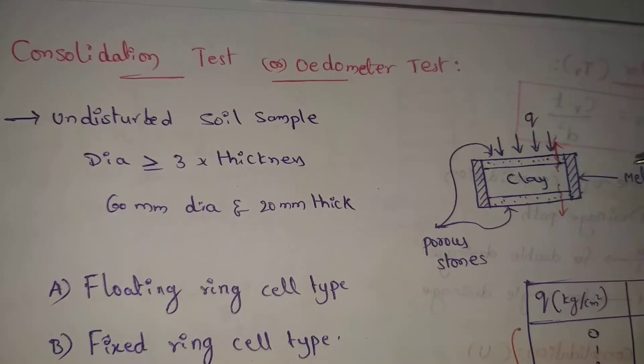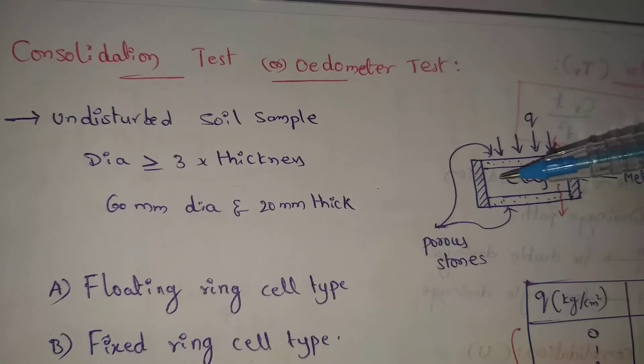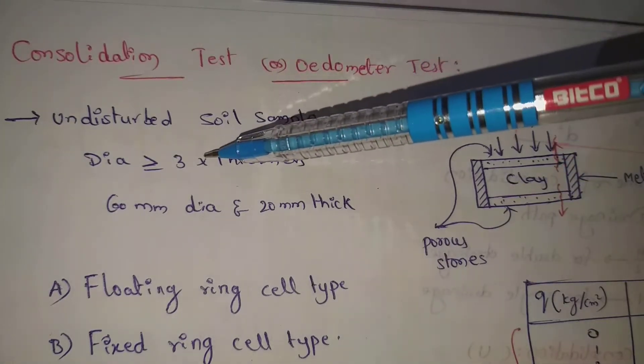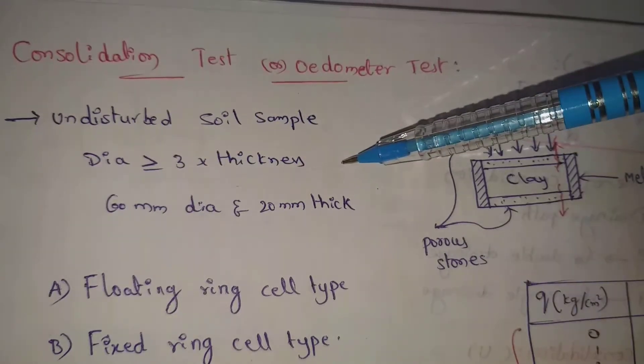That is clay. We will take this clay sample in a circular metallic box. The soil sample diameter of this soil sample is greater than or equal to 3 into thickness of that soil.